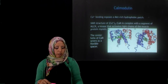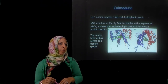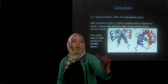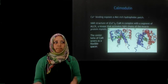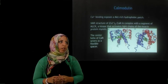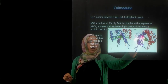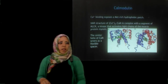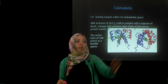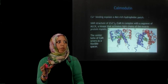One example of how that longer helix acts as a flexible linker is shown where there is a methionine-rich hydrophobic patch that exposes itself to the target protein. It is shown bound to a segment of a protein, and here is a different view of how calmodulin can bind to a different protein.